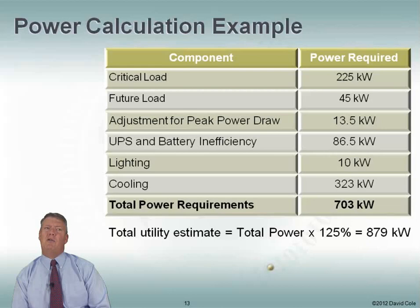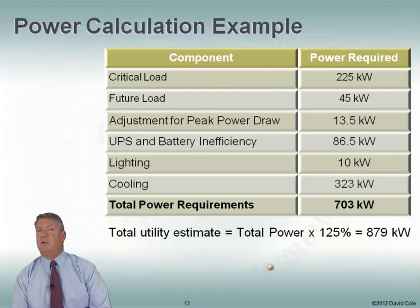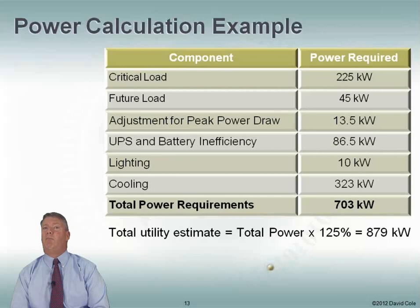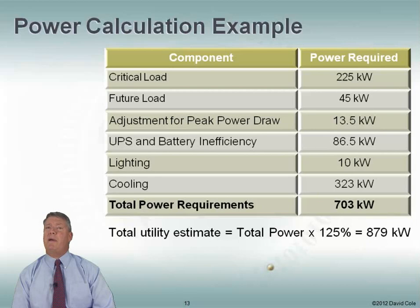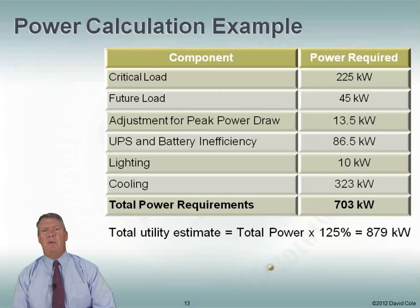How much do I need to tell the utility company? I can't tell them 703 kilowatts, because I never want to use more than 80% of what they give me — I want that 20% overhead according to the National Electric Code. So I take my total power of 703 kilowatts and multiply by another 25%. That means I need to tell the utility company I need 879 kilowatts. Way back we started with 225 kilowatts for our critical load, and now we're at nearly four times that.